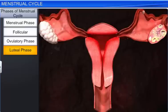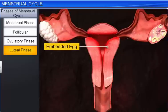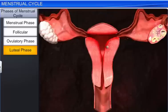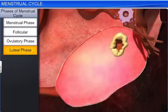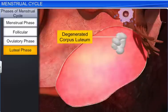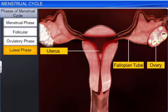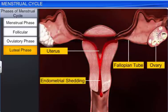A fertilized egg gets embedded in the endometrium and derives nourishment from it. The corpus luteum, on the other hand, starts secreting progesterone that helps maintain the endometrium and encourages the growth of the developing embryo. Conversely, in the absence of fertilization, the corpus luteum degenerates and triggers the breakdown of the endometrium. This marks the start of menstruation and the beginning of a new menstrual cycle.